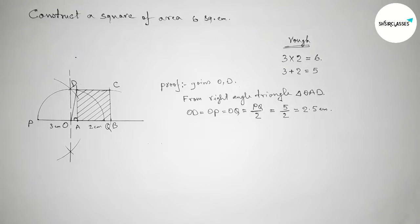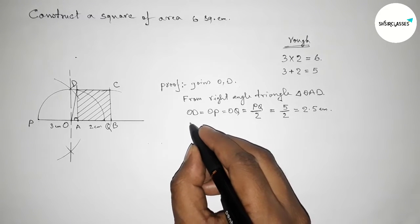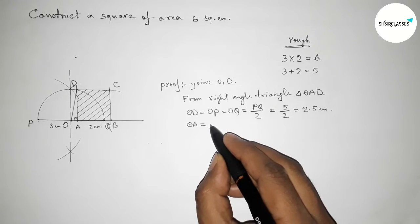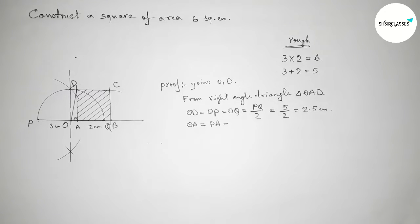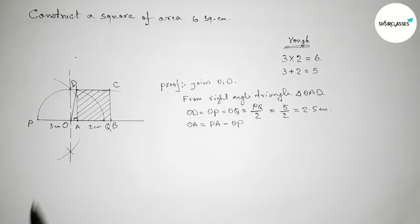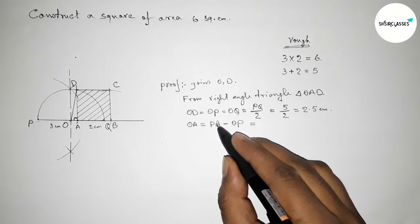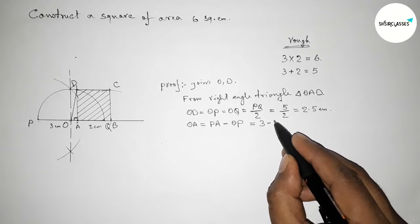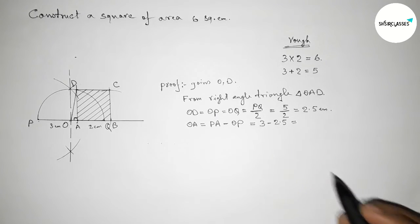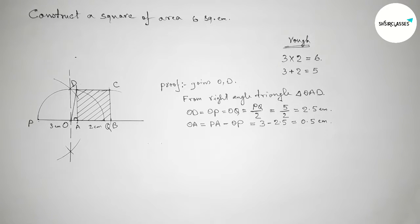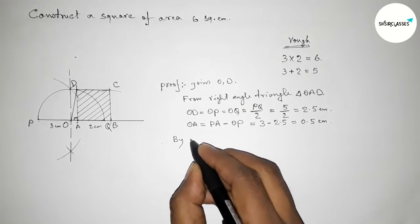Next finding the length of OA, the base of the right angle triangle. OA equals PA minus OP, so subtracting OP from PA: OA equals 3 centimeters minus 2.5 centimeters, which gives 0.5 centimeters.